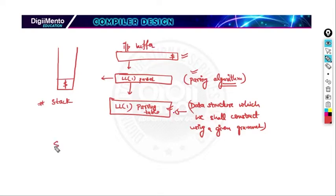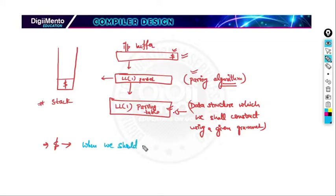Why is dollar used? Dollar is used to know when we should stop reading the input. Dollar stays at the end, and whenever dollar appears in our input, that means we have to stop. These are the basic things related to LL1 parsers.